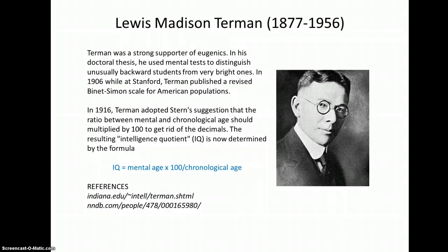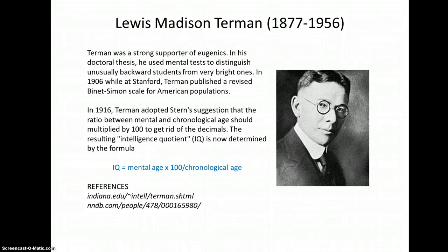Terman was a strong supporter of eugenics. In fact, in his doctoral thesis, he used mental tests to distinguish what he called unusually backward students from very bright students. In 1906, while at Stanford University, he published a revised scale specifically for American populations. In 1916, he adopted Stern's suggestion that the traditional ratio between mental age and chronological age should be multiplied by 100 to get rid of the decimals. The resulting intelligence quotient, or IQ, is the same as we use it now. The formula is: IQ equals your mental age divided by your chronological age, times 100.